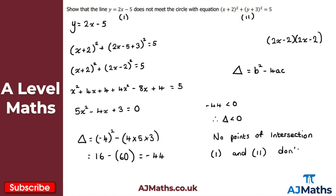And there we have it — that's our solution. Do make use of the discriminant; that's the key idea here. If there's only one point of intersection, you want to show that using the discriminant equal to 0, which implies a tangent. If it's less than 0, no intersection. That brings us to the end of this video.